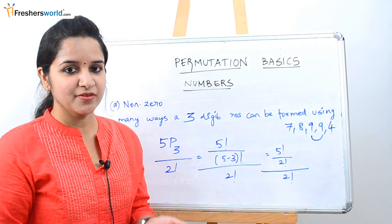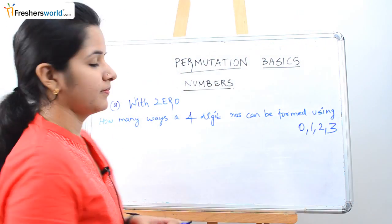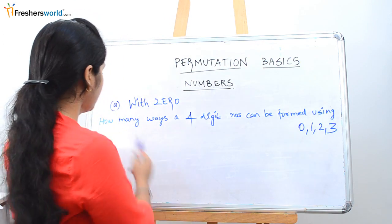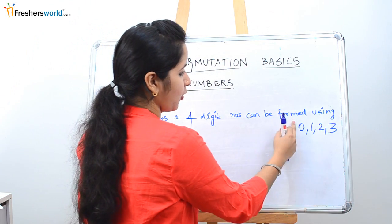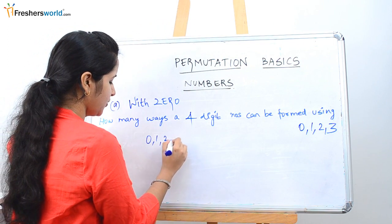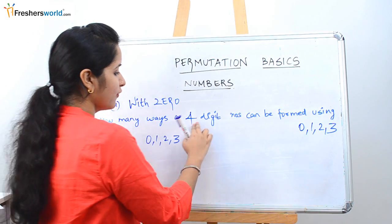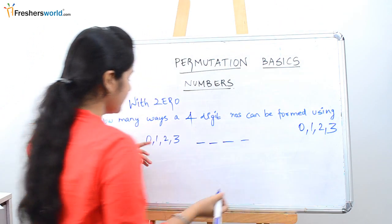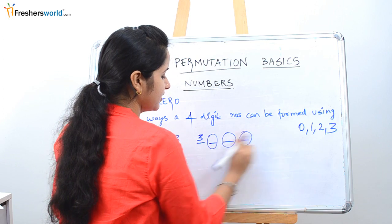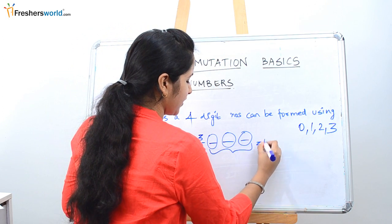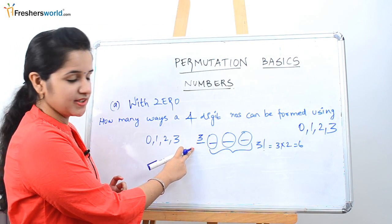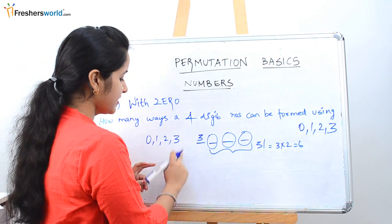Next we deal with sums that have zero in the question. The example is: how many ways can a four-digit number be formed using 0, 1, 2, 3? We have four numbers and need to form four-digit numbers. First, let's consider 3 in the first place — the other three numbers can be arranged in 3 factorial = 3 × 2 = 6 ways. So if 3 is the first digit, there are six ways to form the four-digit number. Similarly, if 2 is the first digit, there are also 3 factorial = 6 ways.